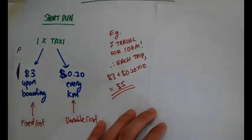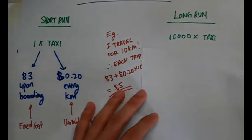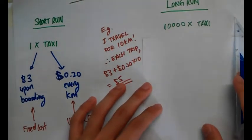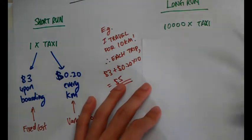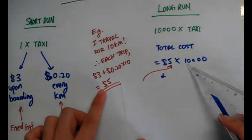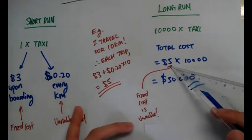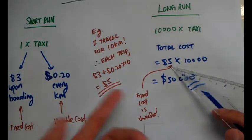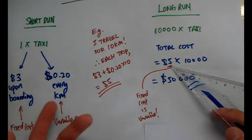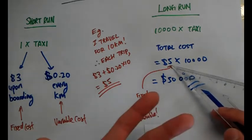In the long run, throughout an entire timeframe, say you take 10,000 taxis. Your total cost would be $5 multiplied by 10,000 cabs, giving $50,000. As you can see, the fixed cost has become variable — the $3 boarding charge becomes variable because the more taxis you take, the more you pay for it. That is why in the long run, all costs are variable.